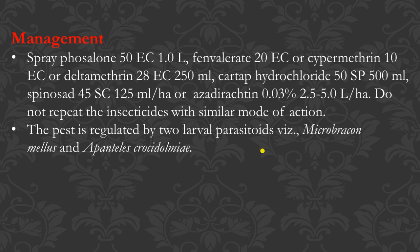For the management of cabbage leaf webber, phosalone 50 EC at 1 liter per hectare can be sprayed. Alternatively, fenvalerate 20 EC, cypermethrin 10 EC, or deltamethrin 20 EC can be used. For biological control, larval parasitoids like braconids or egg parasitoids like Trichogramma can be used.